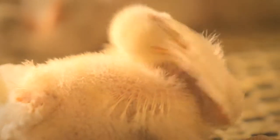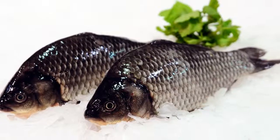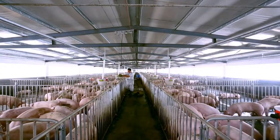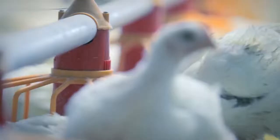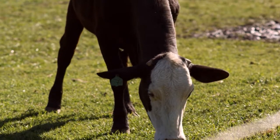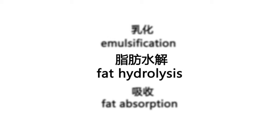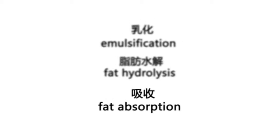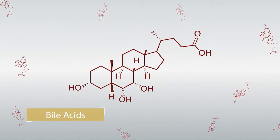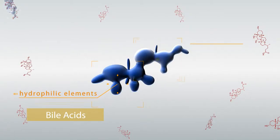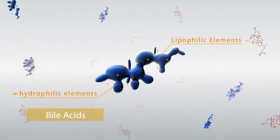In the modern breeding industry, fat and oil content is becoming higher in feed formulation. However, fat digestion is a complicated process with three steps: emulsification, digestion, and absorption. Different from regular emulsifiers, bile acids play an important role in all three steps.